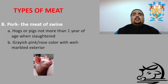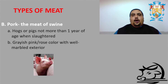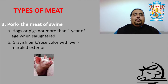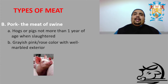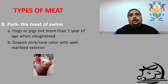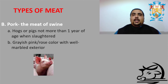Next is pork — from pigs or swine, also called hogs. Pigs not more than one year of age when slaughtered are called pork. The meat color is grayish pink or rose color with well-marbled exterior having a high fat content on the exterior. We call it white fat, which is separated from the meat especially in the cow.